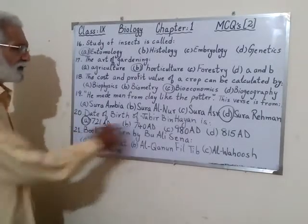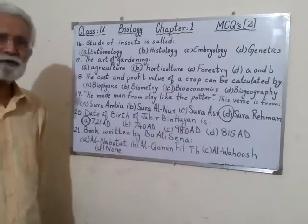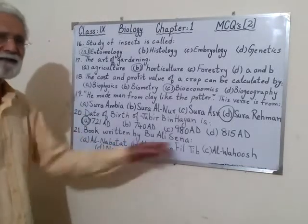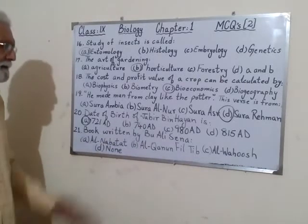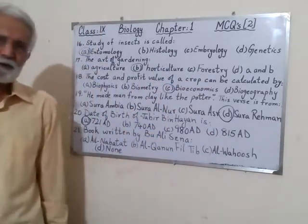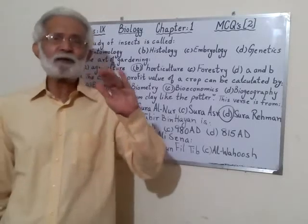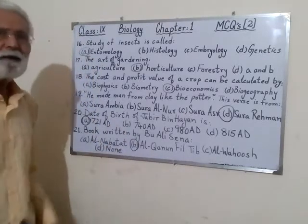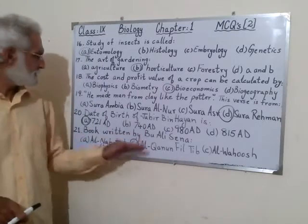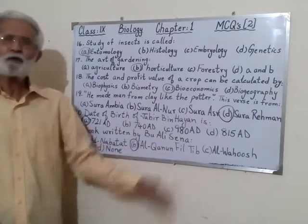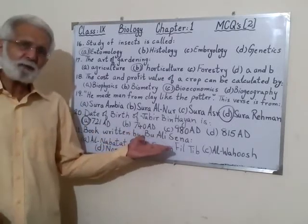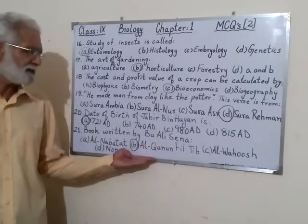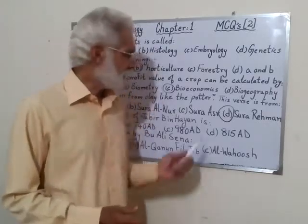Number 21: book written by Ibn Sina. The options include Al-Bar, Al-Hoosh, Al-Quran, or none of these. We remember that Ibn Sina was the topmost Muslim scientist and was considered the father of medicine. The book related to medicine written by Ibn Sina is Al-Qanun fil-Tibb. Al-Abeel and others were not written by Ibn Sina. So choice B is correct: Al-Qanun fil-Tibb was written by Ibn Sina.